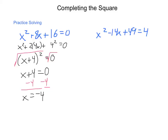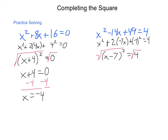Let's take a look at our second one: x squared minus 14x plus 49 equals 4. This is x squared plus 2 times negative 7x plus negative 7 squared equals 4. So that means I can simplify this down into x minus 7 squared equals 4. Solving using square roots, I take the square root of the left and right-hand sides and come out with x minus 7 equals plus or minus 4.